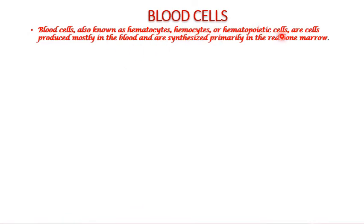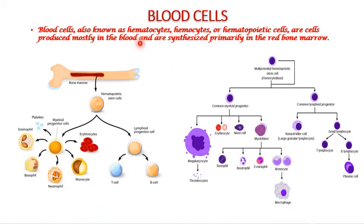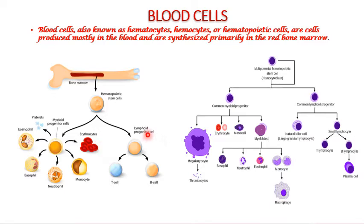hemocytes, or hematopoietic cells, and these are mainly produced by the blood and synthesized primarily by the red bone marrow. Here you can see a bone marrow which contains hematopoietic stem cells, where further they differentiate into myeloid progenitor cells and lymphoid cells. Myeloid progenitor cells contain platelets, eosinophils, basophils, neutrophils, monocytes, and erythrocytes, but lymphoid progenitor cells contain only B cells and T cells.